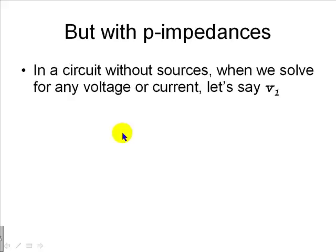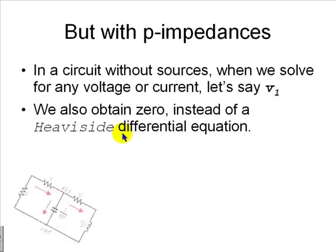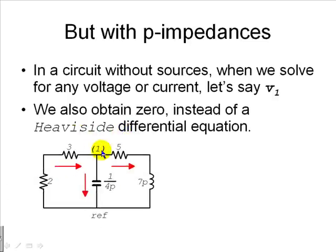But in a circuit with p-impedances with no sources, when we solve for any voltage or current, let's say V1 in the s domain, we also obtain zero instead of a Heaviside differential equation. You say, but shouldn't you get a zero? No, not necessarily, because if there is energy stored in this capacitor or in this inductor or in both, that voltage will eventually be zero, but it will not start as zero. We need a differential equation.